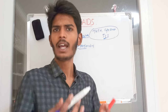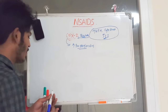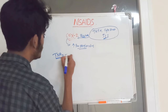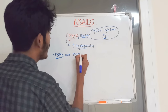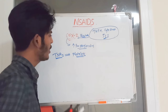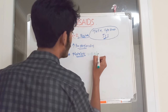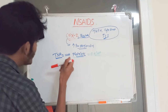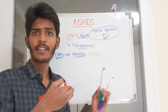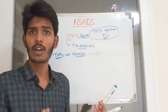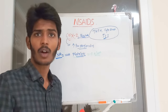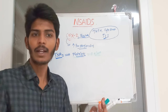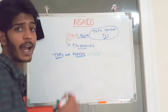Thromboxane A2 is present in our platelets and is involved in blood clot formation. It stimulates platelet aggregation. Thromboxane A2 is produced by the action of cyclooxygenase enzymes. When there is impairment of platelet aggregation, clot formation is affected — this is key to understanding how NSAIDs act.